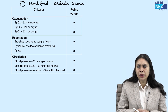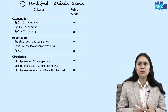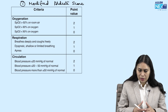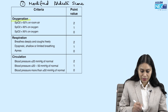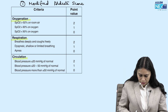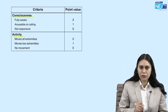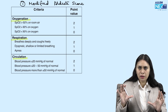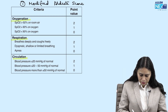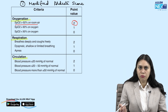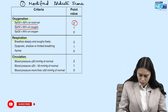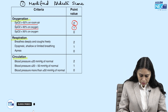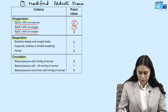The five criteria of the Modified Aldrete Score are: oxygenation, respiration, circulation, consciousness, and activity. For oxygenation, we look at the SpO2 value. If SpO2 is more than 92% on room air, we give a score of 2. If it is more than 90% on oxygen, the score is 1. And if it is less than 90% on oxygen, the score is 0.